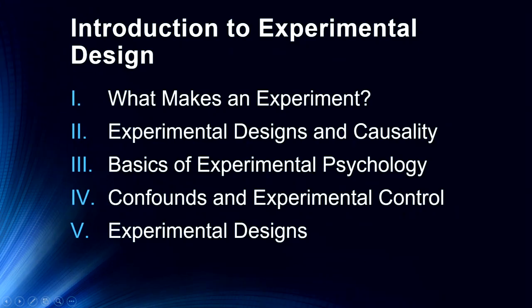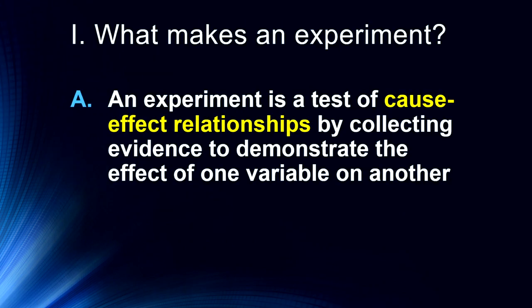I want to spend a few minutes today talking about what makes an experiment, the relationship between experimental designs and causality, some basics of experimental psychology, and introduce the concept of confounds and experimental control. The next lecture will be entirely on confounds and experimental control. And finally, we'll finish up with some discussion of different types of experimental designs. So let's start with what makes an experiment.